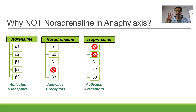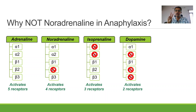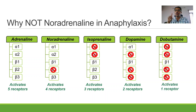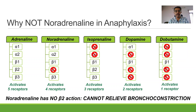Next, we have isoprenaline, which activates three adrenergic receptors: beta-1, beta-2, beta-3 — it has no action on alpha receptors at all. Then dopamine, which activates alpha-1 and beta-1 in the adrenergic receptor system, and is also an agonist on D1 and D2 dopaminergic receptors. And dobutamine acts only on the beta-1 receptor — it is a pure beta-1 receptor agonist. Looking at this chart, the answer to why not noradrenaline in the management of anaphylaxis is very simple: it does not have beta-2 receptor agonism. Noradrenaline has no beta-2 action. Beta-2 receptor agonism is important for producing bronchodilatation. Noradrenaline cannot relieve bronchoconstriction, and that is the reason why you should not use noradrenaline in the management of anaphylaxis.